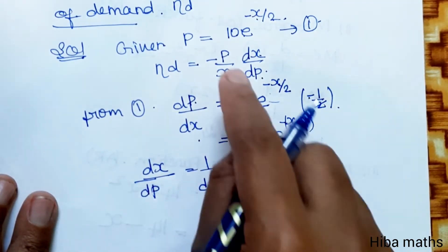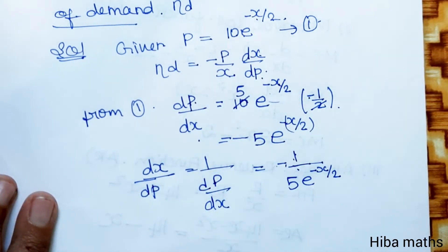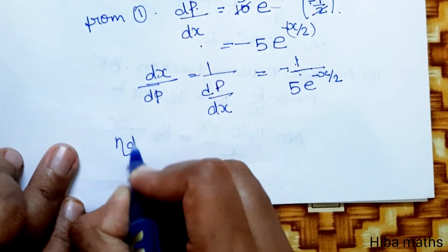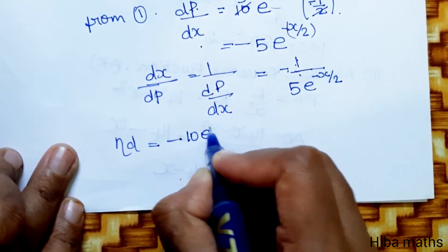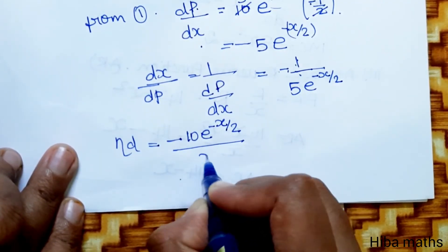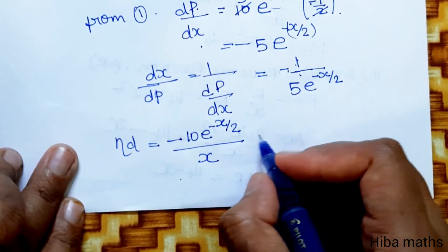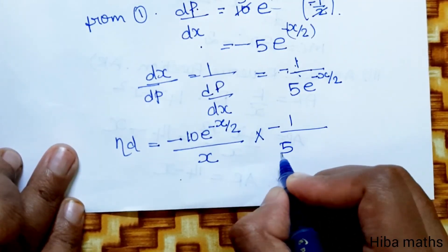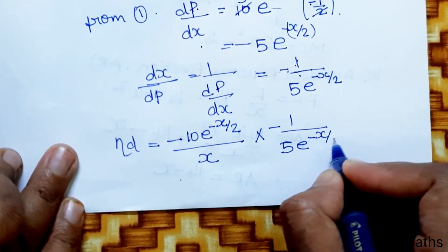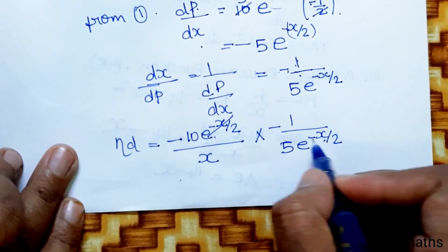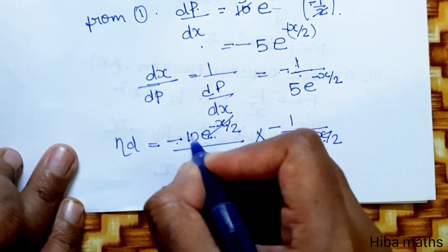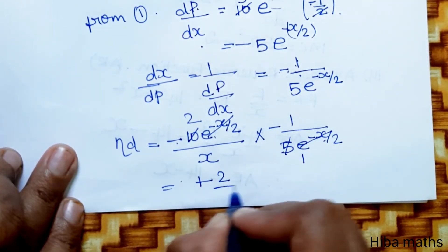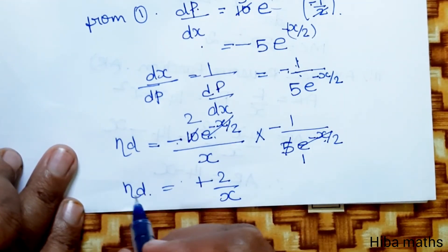Now substituting into the formula: η_d = −[10·e^(−x/2) / x] · [−1/(5·e^(−x/2))]. The e^(−x/2) terms cancel, and minus × minus gives plus. So η_d = 10/(5x) = 2/x. This is the elasticity of demand value.